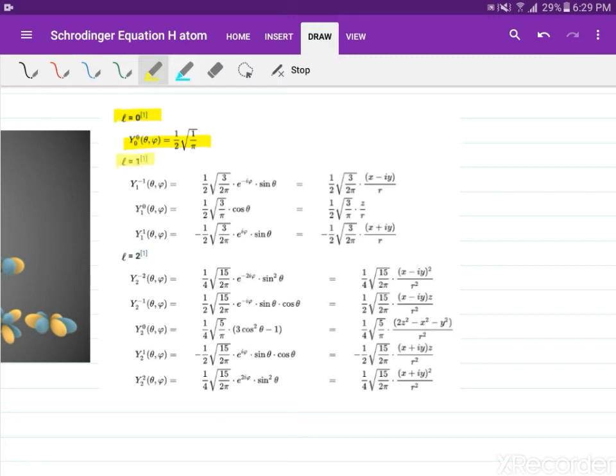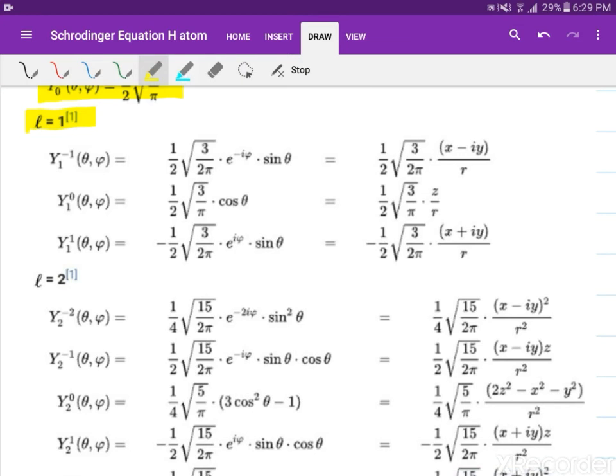For L equals 1, we would have this constant times our exponential, which arises from the azimuthal part, times sine of theta, which is from the Legendre polynomials. Take note that M here is negative 1, which is why the argument of our exponential is negative, and L here is 1.